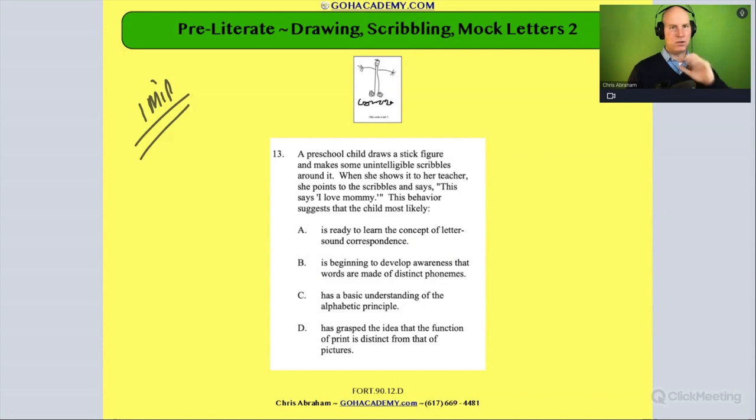I'm going to read it, you can speed through this if you want to. It says here, a preschool child, so let's just circle preschool, and let's do that earlier end, so three to four year old. Draws with stick figures and makes some unintelligible scribbles around it. When she shows it to her teacher, she points to the scribbles and says, this says I love mommy.